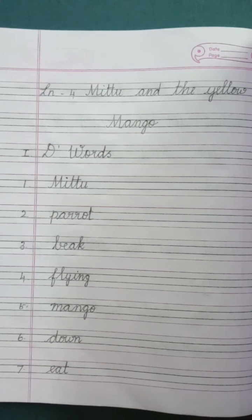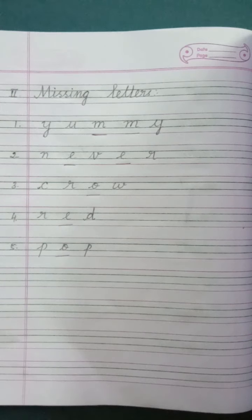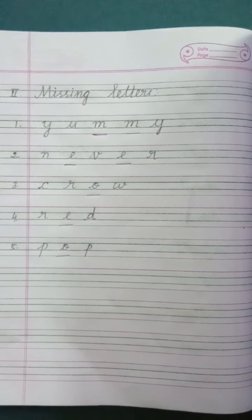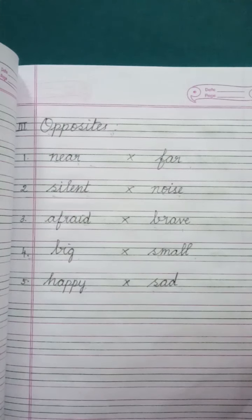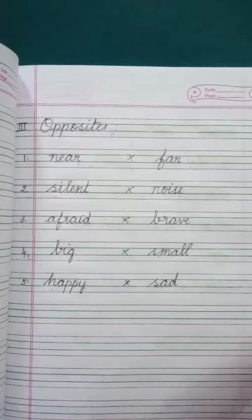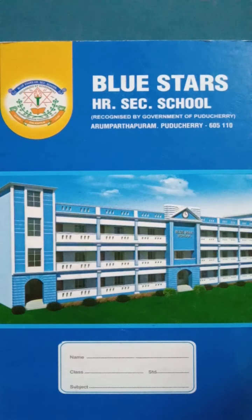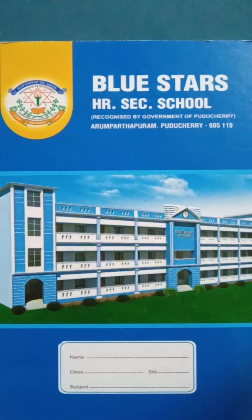Children, for Lesson 4 you have to complete Roman Letter 1 D Words, Roman Letter 2 Missing Letters, and Roman Letter 3 Opposites. Today's homework: complete Roman Letters 1, 2, and 3 in your English Homework Note. Say and write, children — touch the line and write. See you in the next class. Thank you!